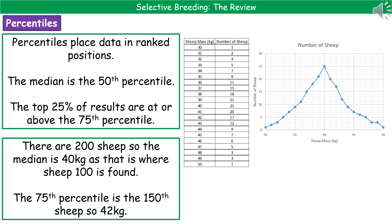One of the questions they could ask you around selective breeding is to do with percentiles. Hopefully this is something you've done in your maths lessons, but we'll recap it here. With percentiles, what we have to do is start off by placing all of your data in ranked positions. If we're talking about the median, that would be the 50th percentile.